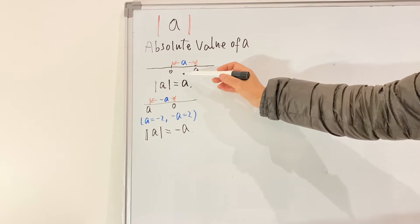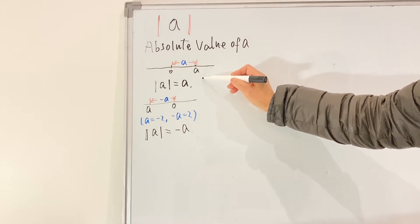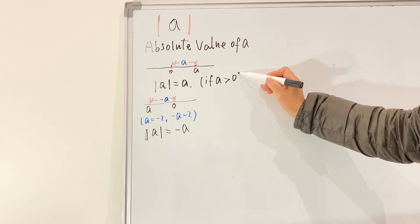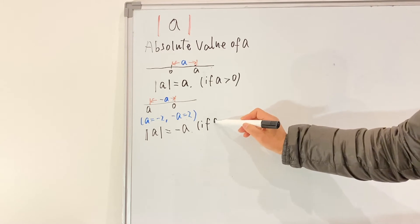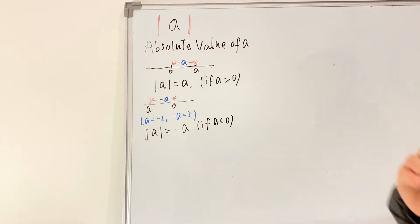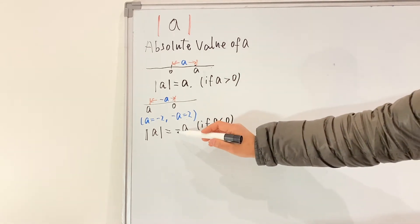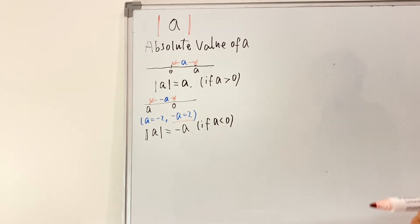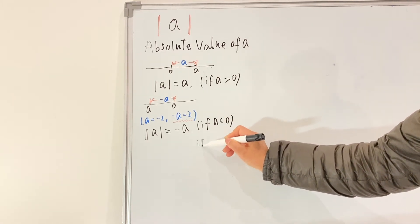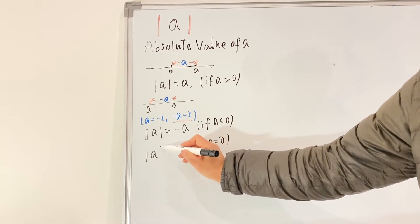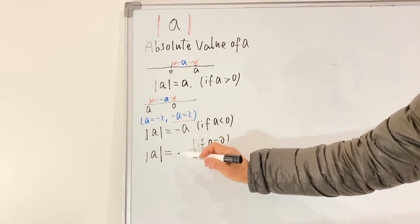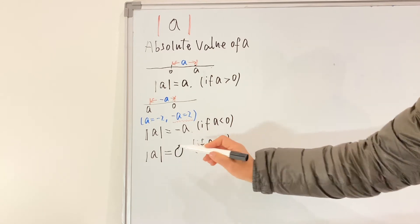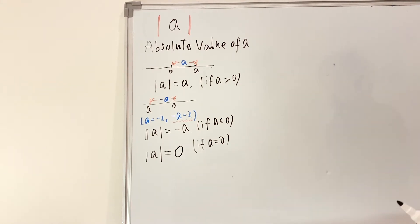It's really determined by whether a is on the right-hand side of the origin — meaning a is a positive number — or on the left-hand side, meaning a is less than zero. Then the absolute value will be negative a, but negative a is still a positive number. And when a equals zero, the absolute value of a, which is the distance from the origin to itself, will of course be zero.